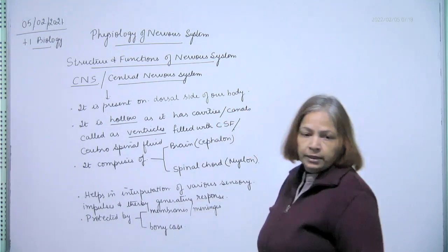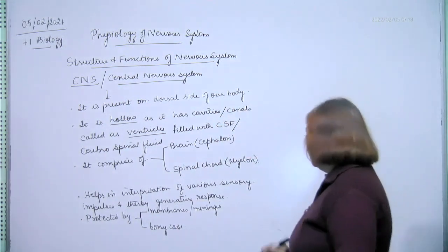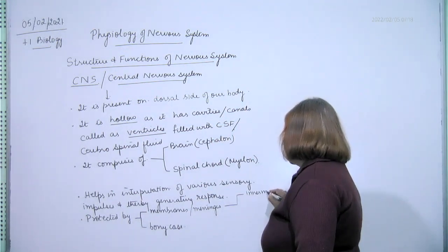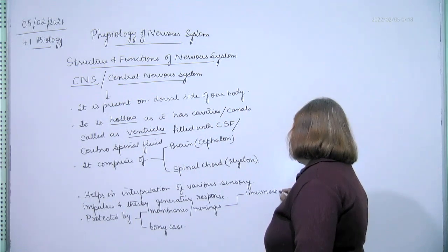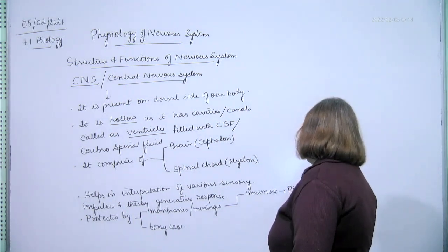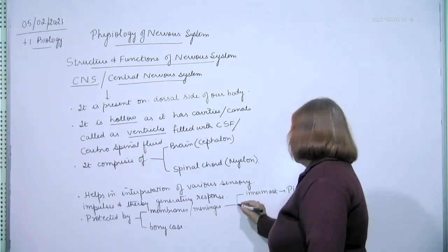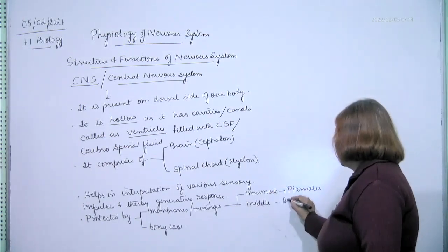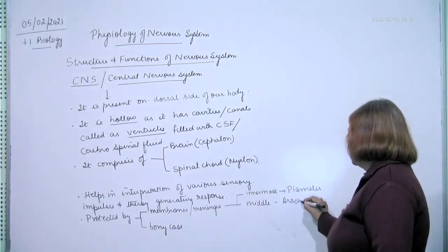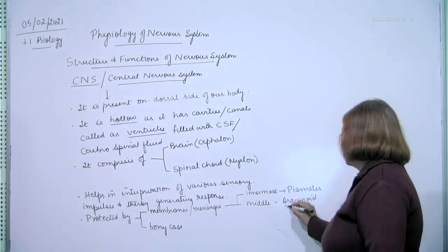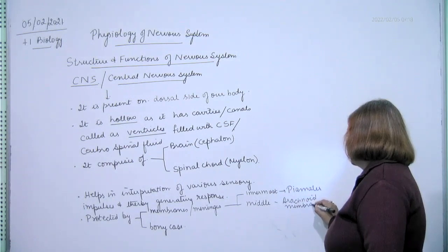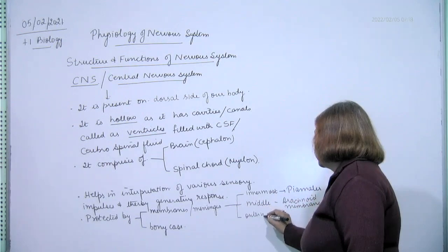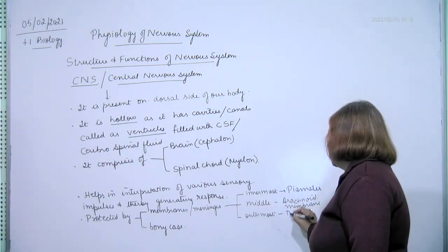These are called as meninges. Innermost is piameter, middle is arachnoid membrane, and outer is durameter.